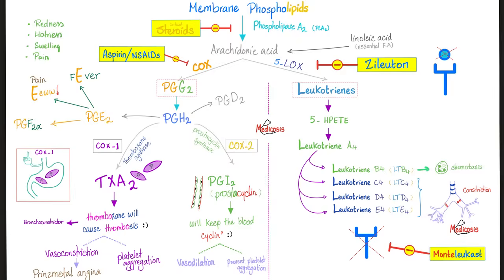If you want to make thromboxane A2, talk to cyclooxygenase 1. But if you want to make prostacyclin, talk to cyclooxygenase 2. Prostaglandin H2 can give us prostaglandin D2 and prostaglandin E2. Prostaglandin E is for fever and pain. Prostaglandin E2 can also give us prostaglandin F2-alpha.